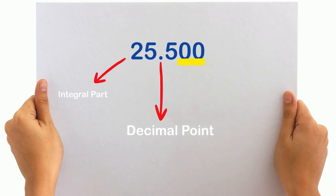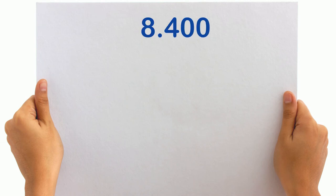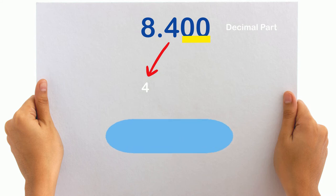Also, zeros that come in the decimal part on the right of the decimal point after the digits also have no value. For instance, in 8.400, there is no value of the two zeros after the 4 in the decimal part, so we should simply write it as 8.4.